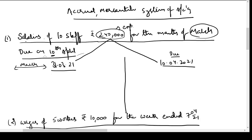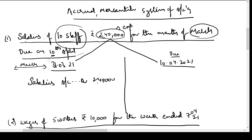Under accrual or mercantile system of accounting, we have to recognize the expense in the period in which we have enjoyed the benefits from that expense. The business enjoyed the benefit of the staff's services in the month of March, hence the expense has to be recorded in March itself. The entry is: Salaries Account — Debit 2,40,000; Accrued Salaries Account — Credit 2,40,000. Instead of writing all their individual names as creditors, we write Accrued Salaries Account.